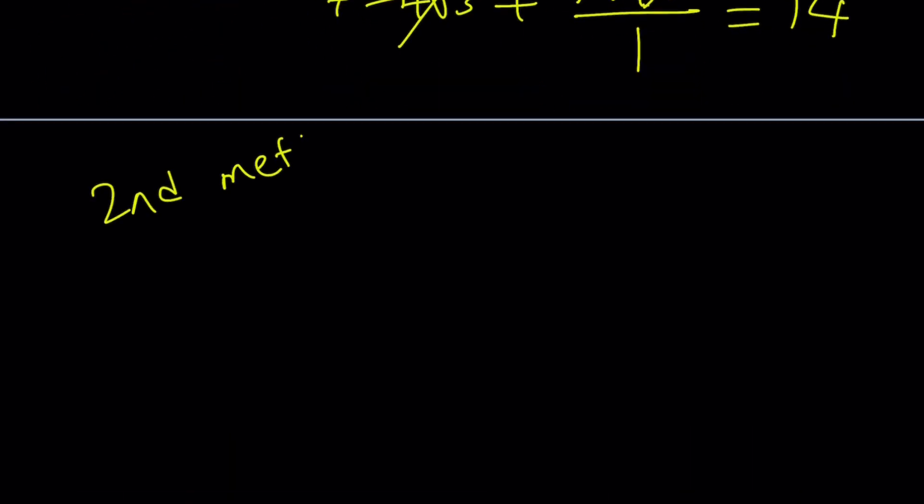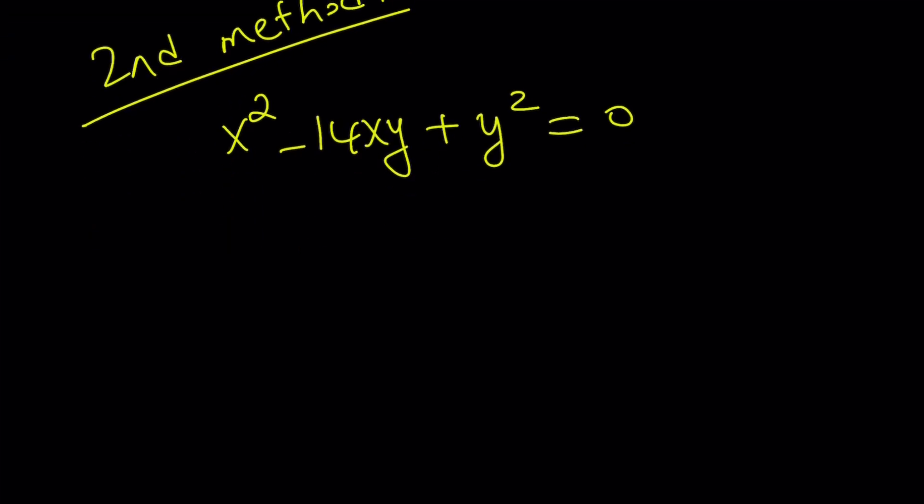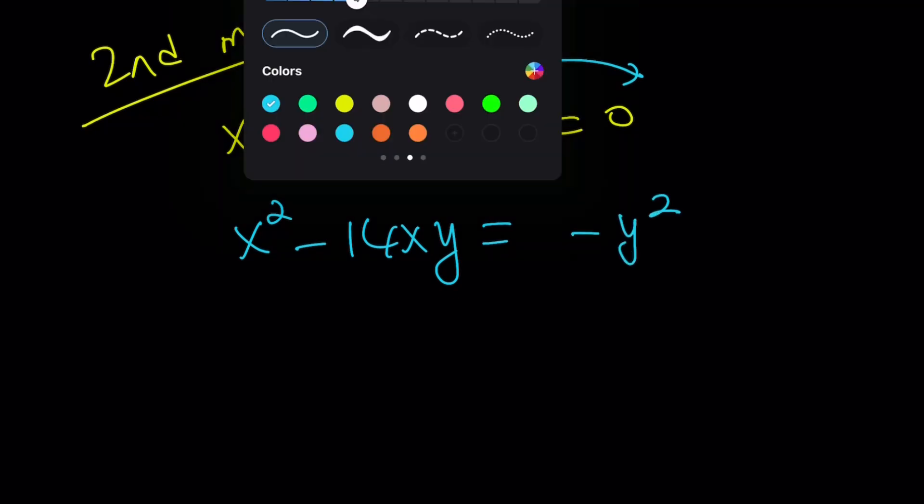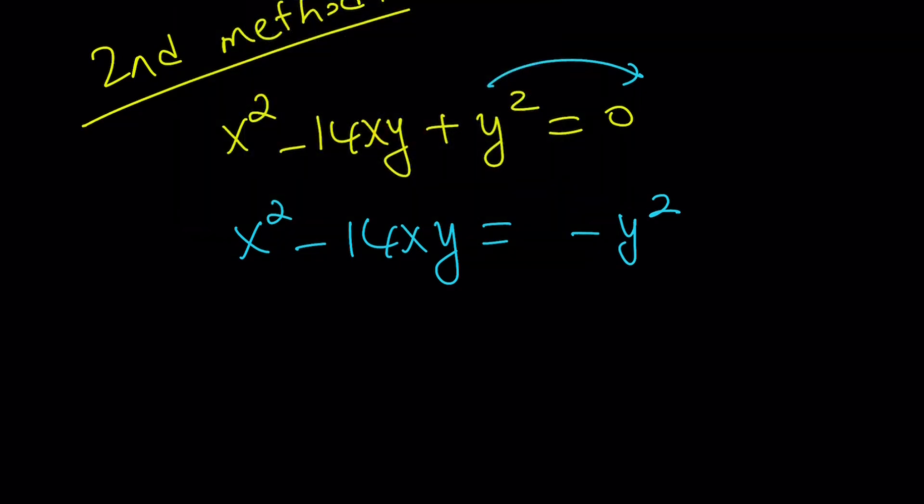We could even talk about a third approach maybe really briefly if we have time towards the end. So here's our equation one more time. x squared minus 14xy plus y squared is equal to 0. So my second approach basically treats this problem differently. So let's go ahead and put the y squared on the right-hand side by subtracting. So x squared minus 14xy equals negative y squared. Now, I want to add something to both sides to make the left-hand side a perfect square.